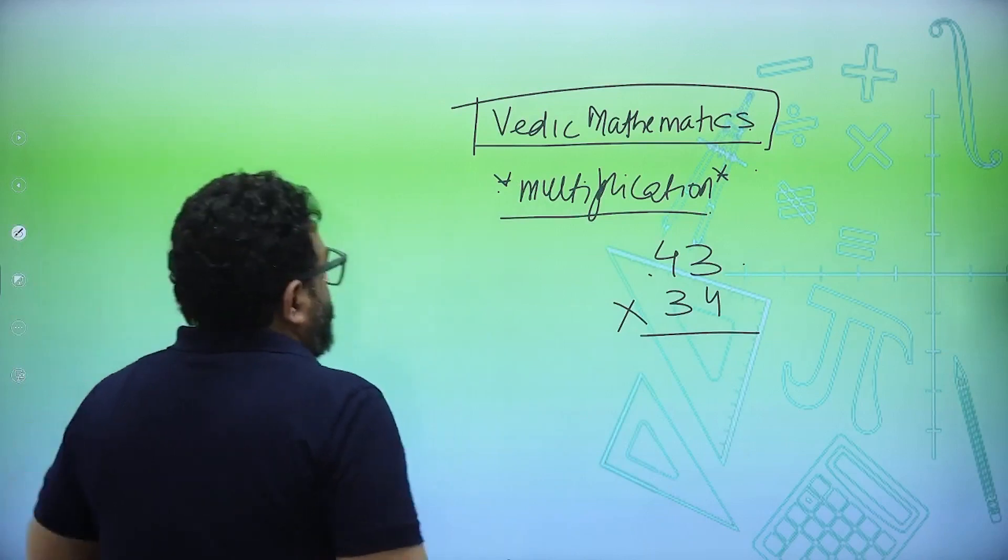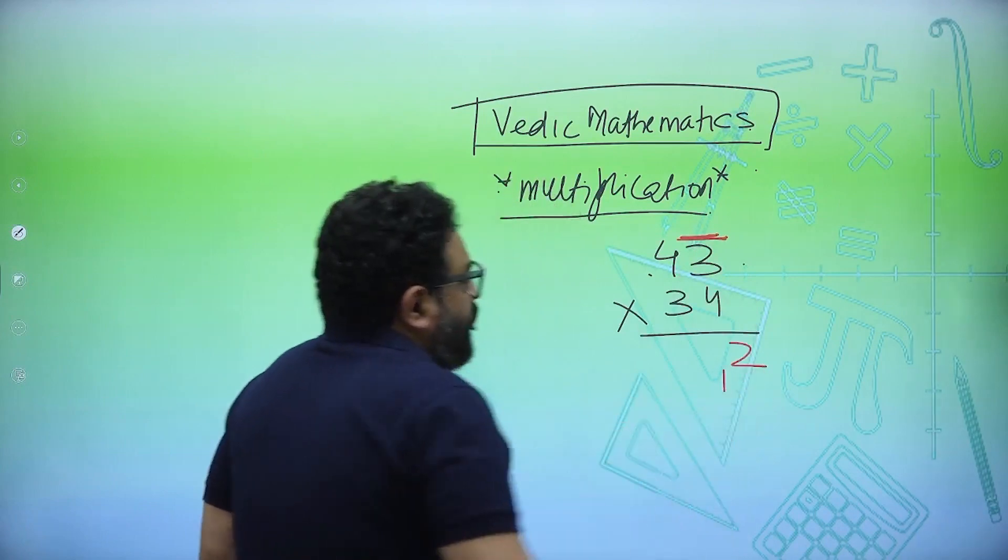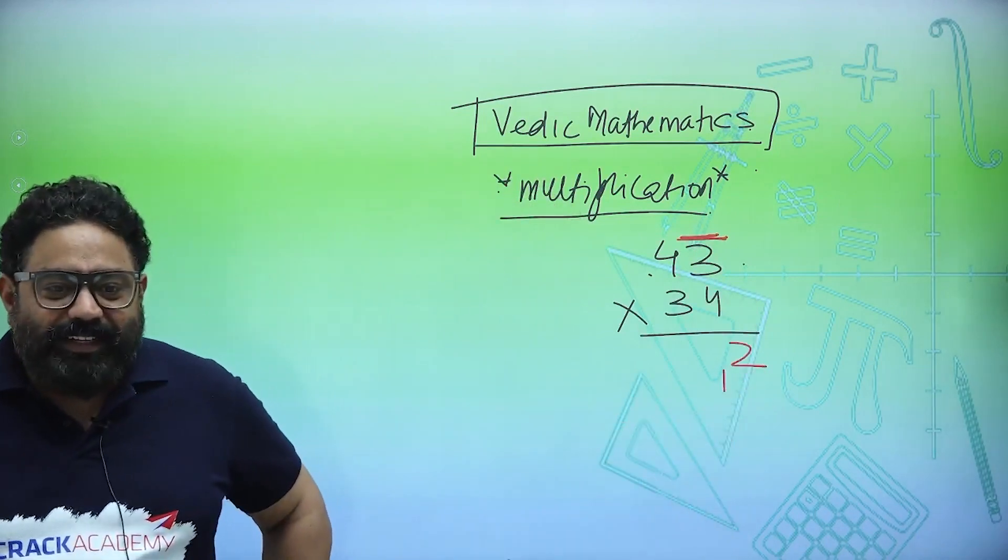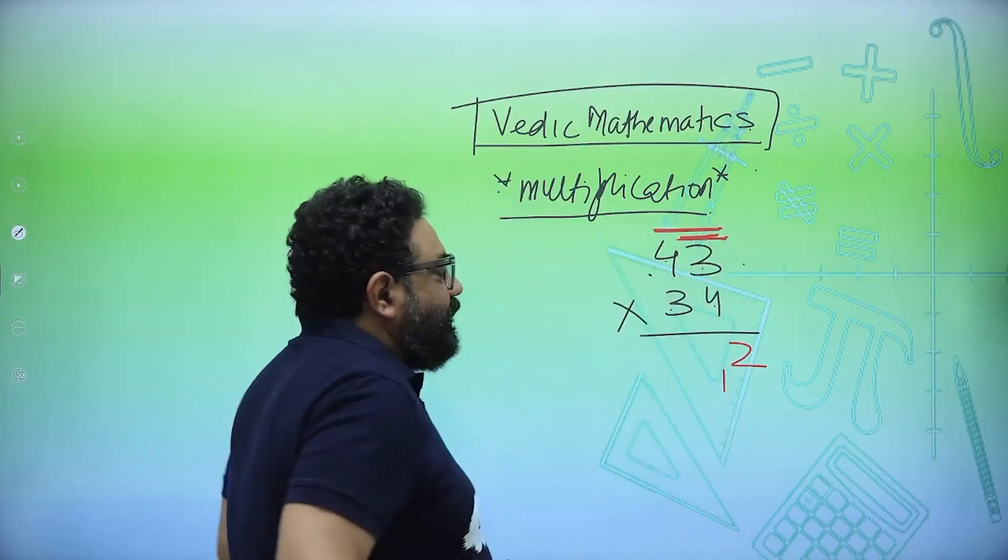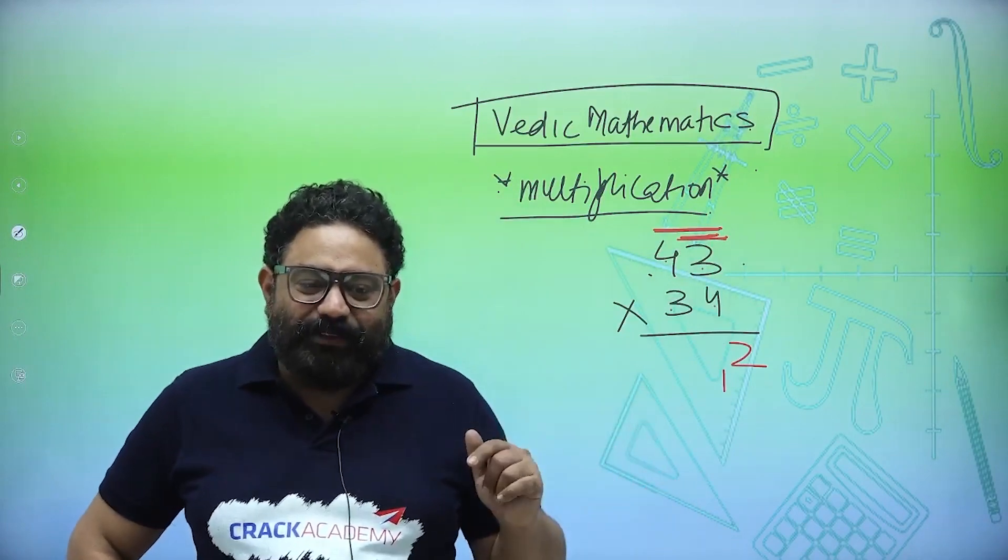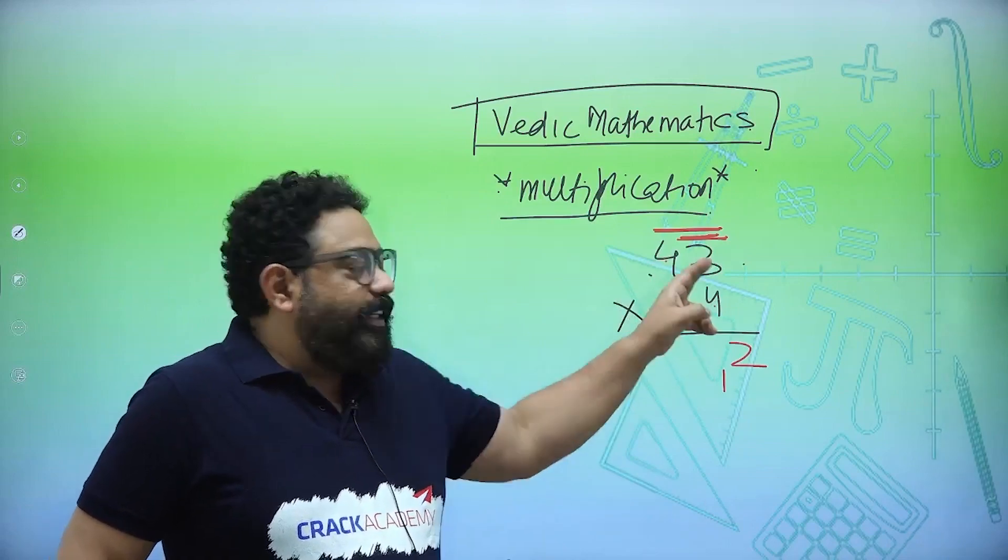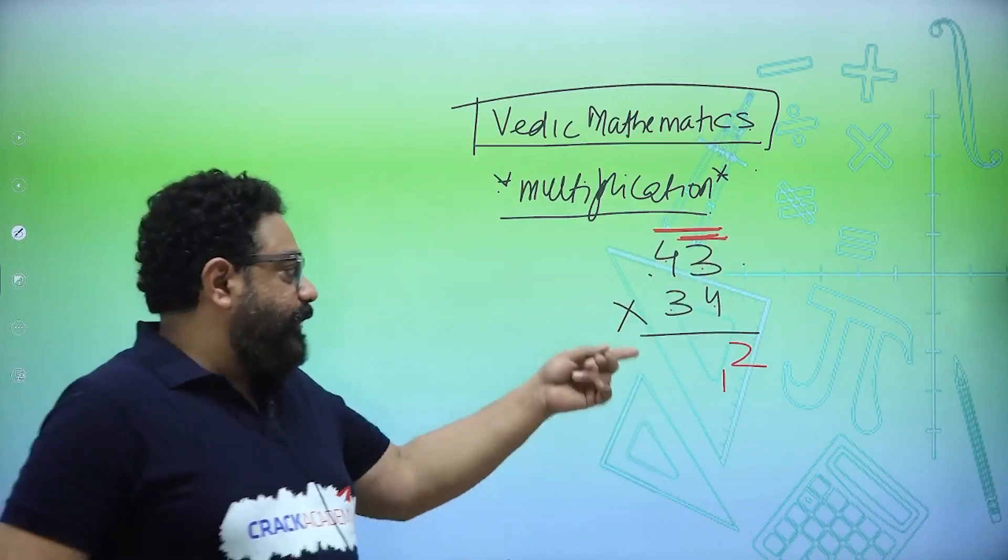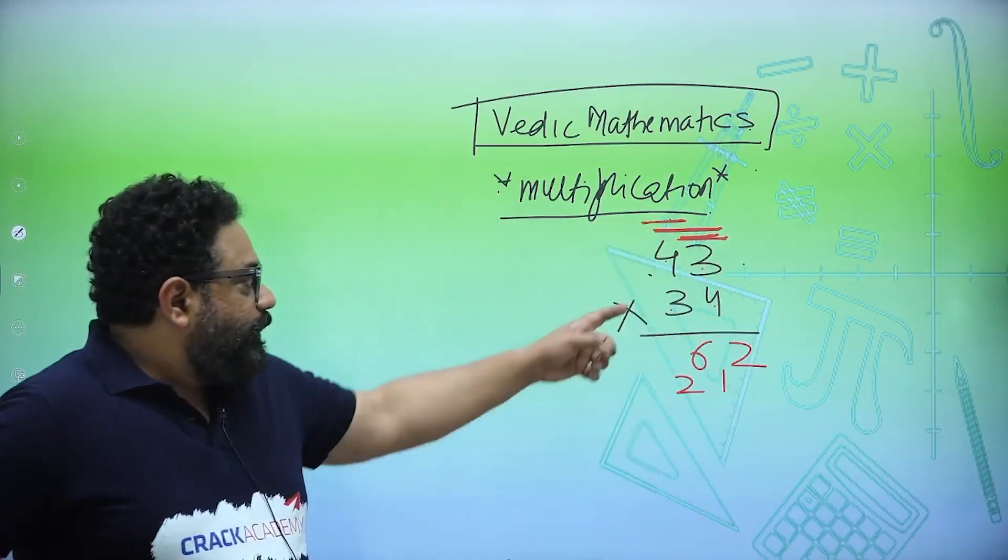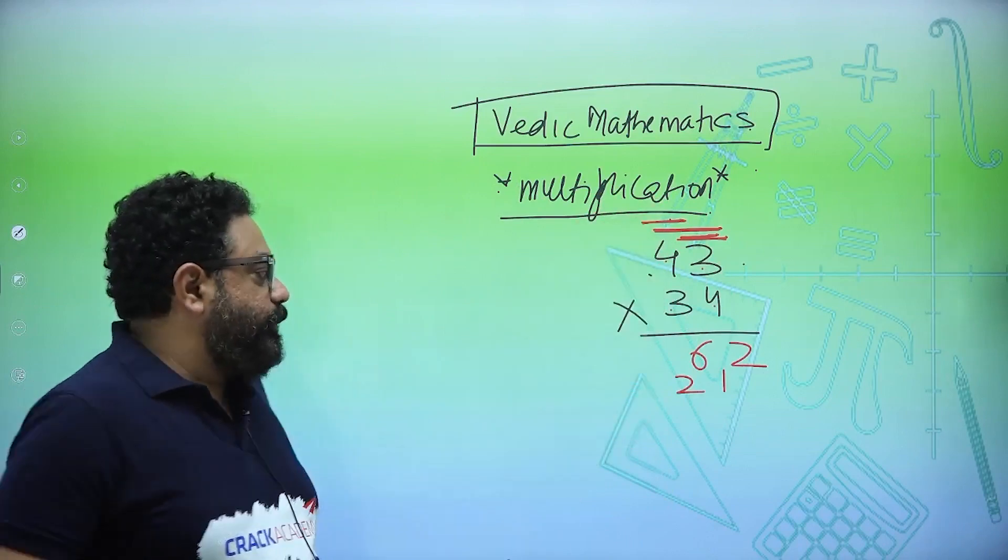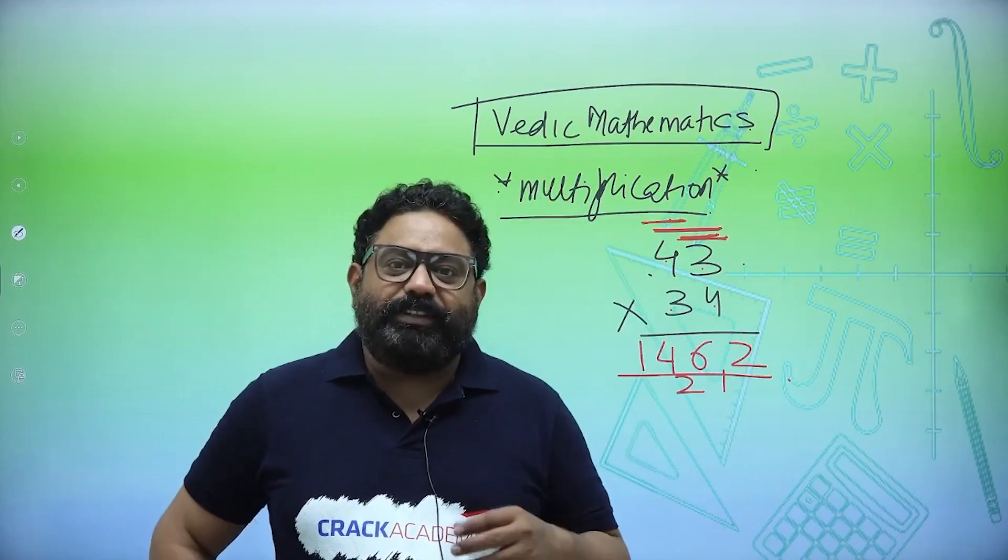I put a bar. So 4 threes are 12, 2 written, 1 carry. Then bar on two numbers. Cross multiply and add: 4 fours are 16, 3 threes are 9, 16 plus 9 is 25. So step 2 is cross multiply and add. 4 fours are 16, 3 threes are 9, 16 and 9 is 25, plus 1 is 26, 2 carry. And the last one, 3 fours are 12, 12 plus 2 is 14. So your answer is 1462.